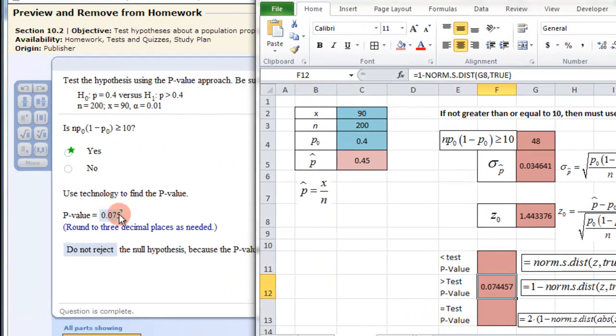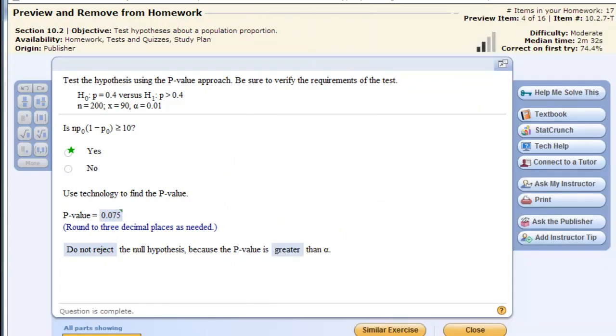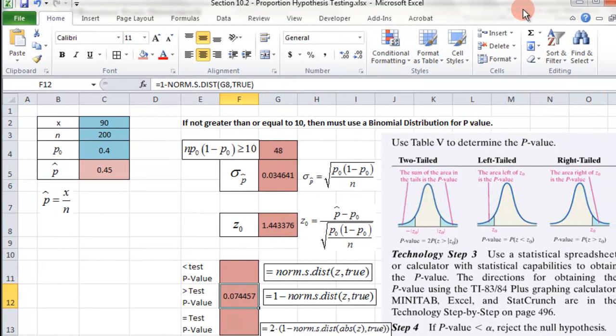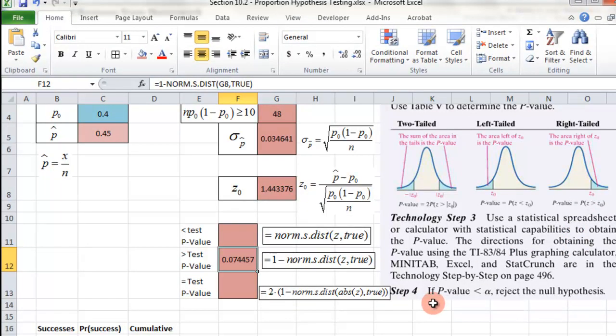And if we look at our value here, the p-value is 0.075. And now, because we are testing at a 0.01 significant level here, and the p-value is not less than the significance value, we do not reject the null hypothesis because the p-value is greater. If it was less than this value, then we would reject the null hypothesis. But since it's greater than that value, we do not reject the null hypothesis.